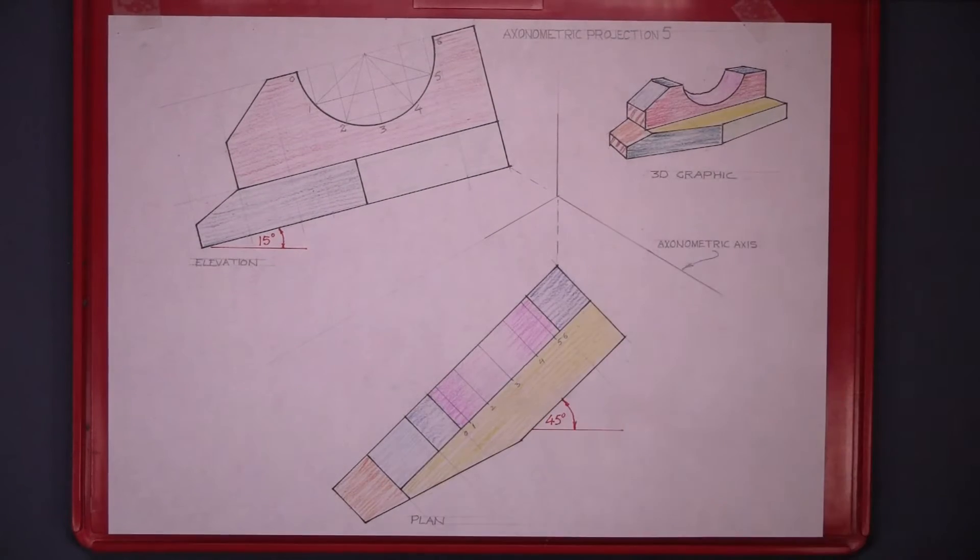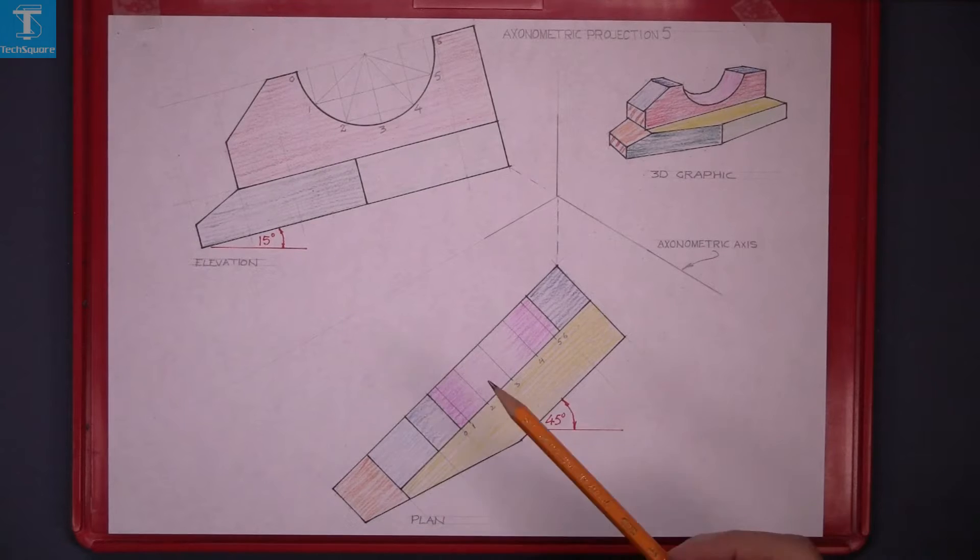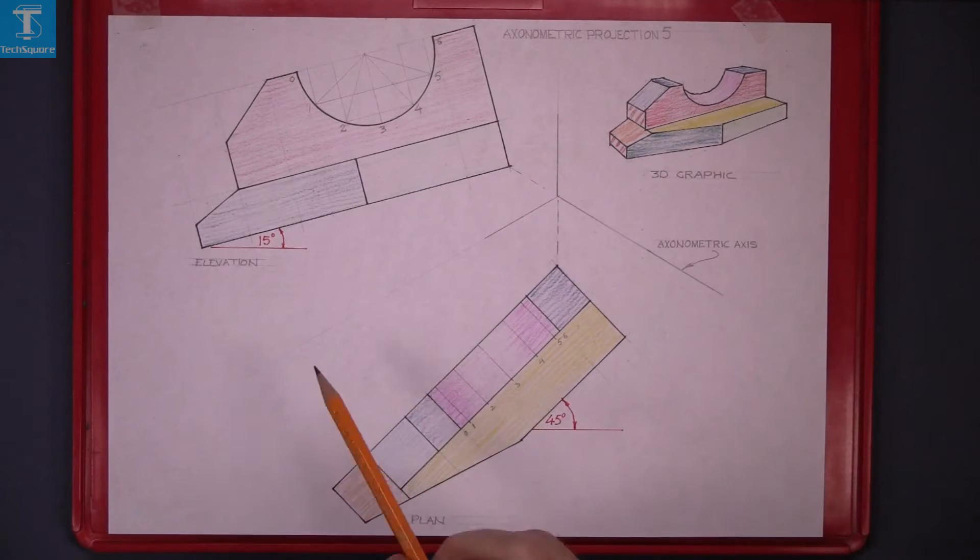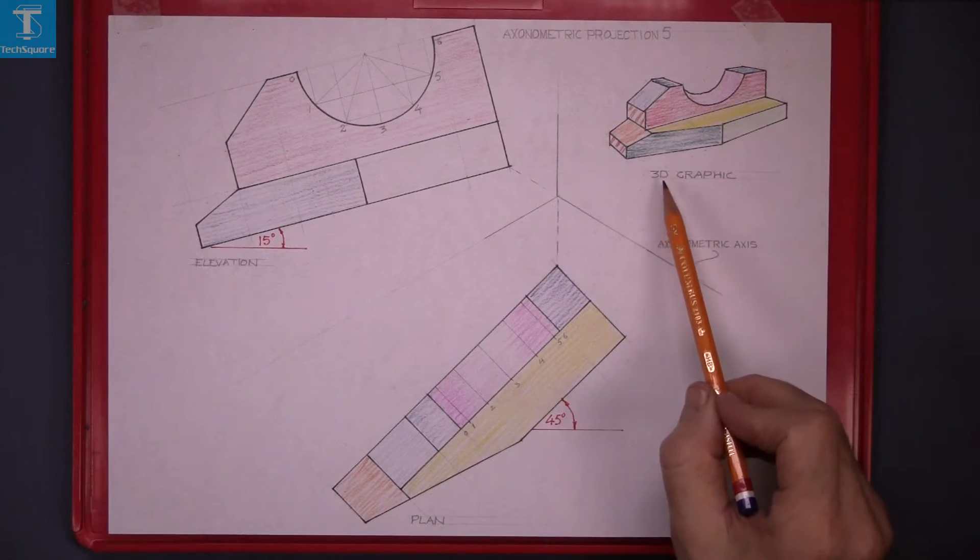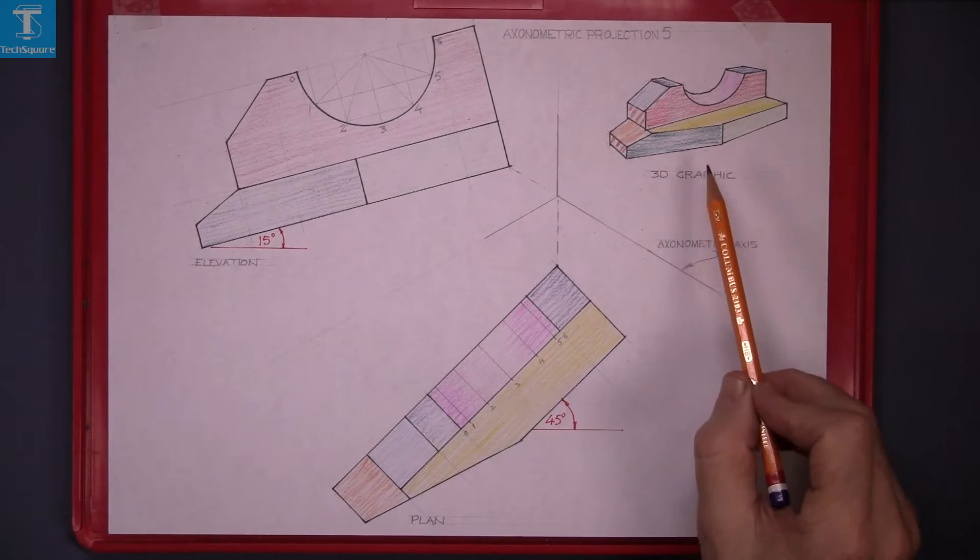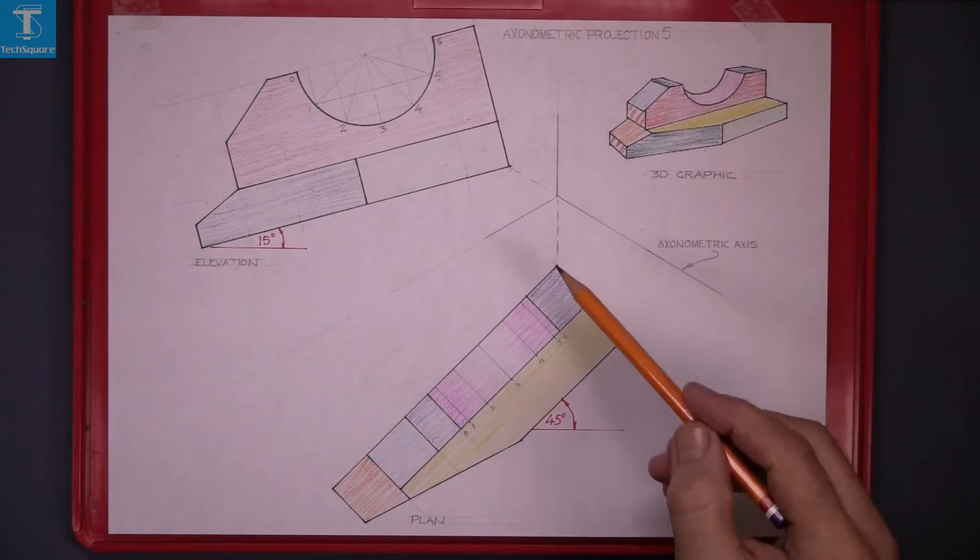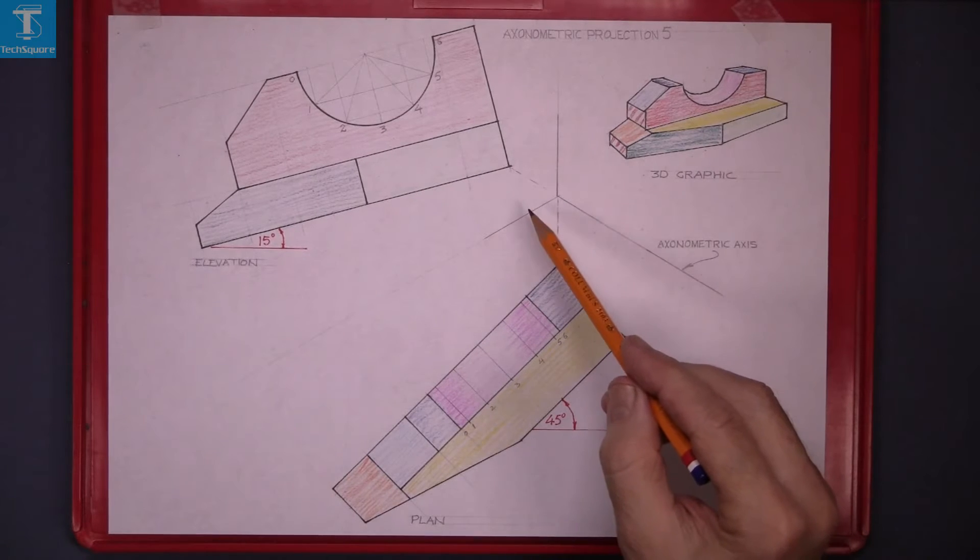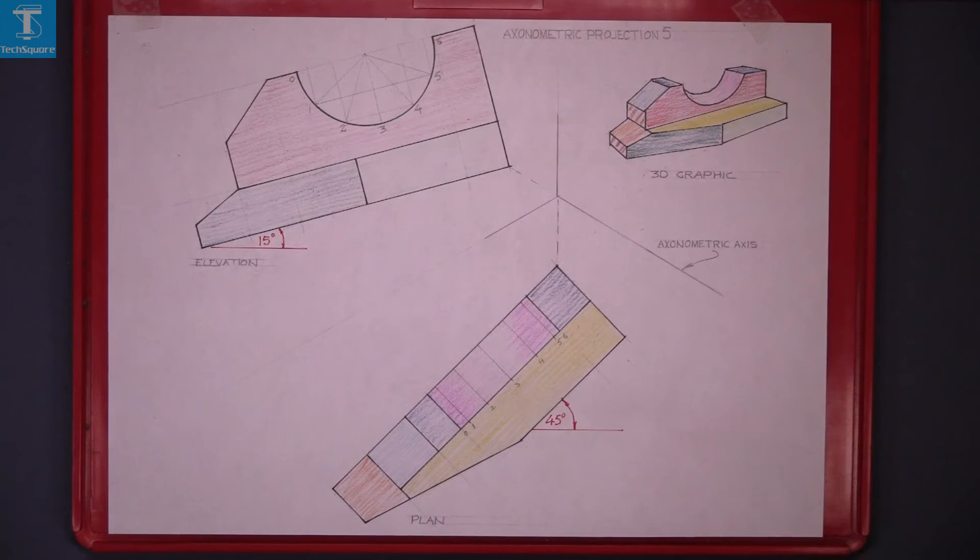Axonometric projection 5. Given the elevation, the plan and the 3D graphic of the solid, you're asked to draw the isometric view using axonometric projection.